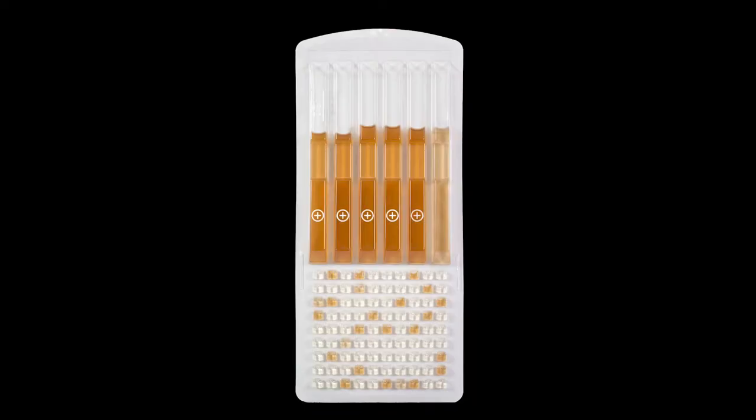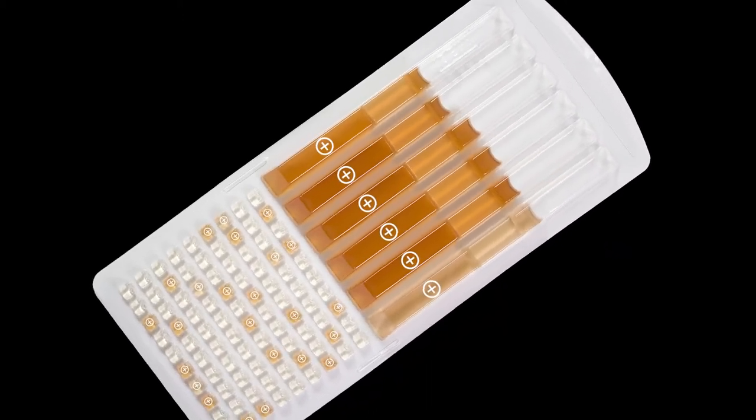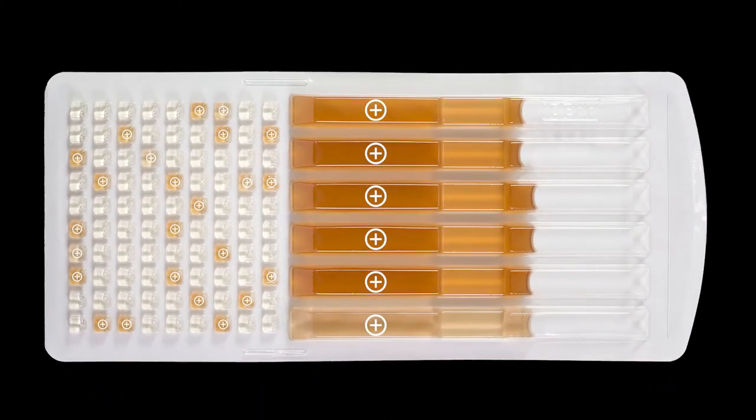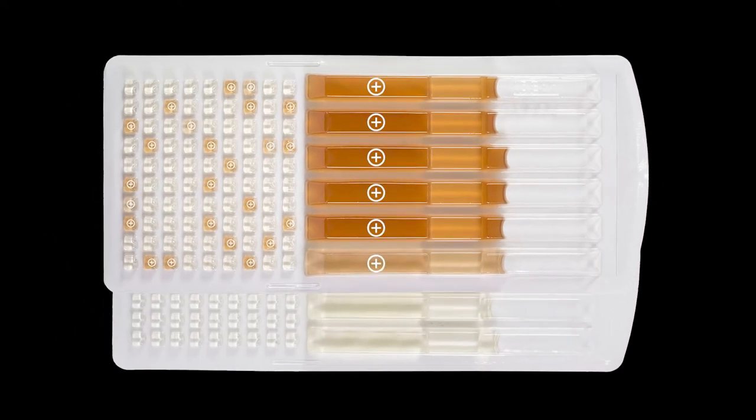Any change to a brown color and or turbidity greater than the negative control indicates a confirmed positive for Legionella pneumophila. Here is an example with both strong and weak positive wells. There are a total of 6 positive large wells and 24 positive small wells.